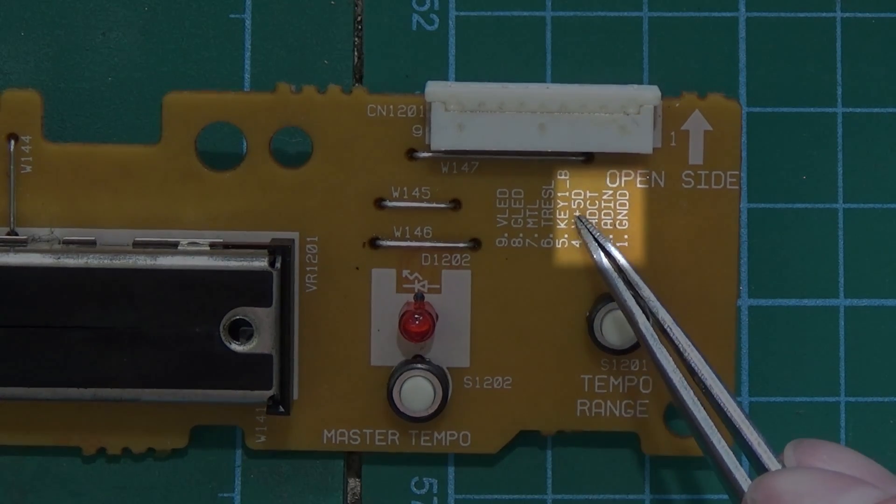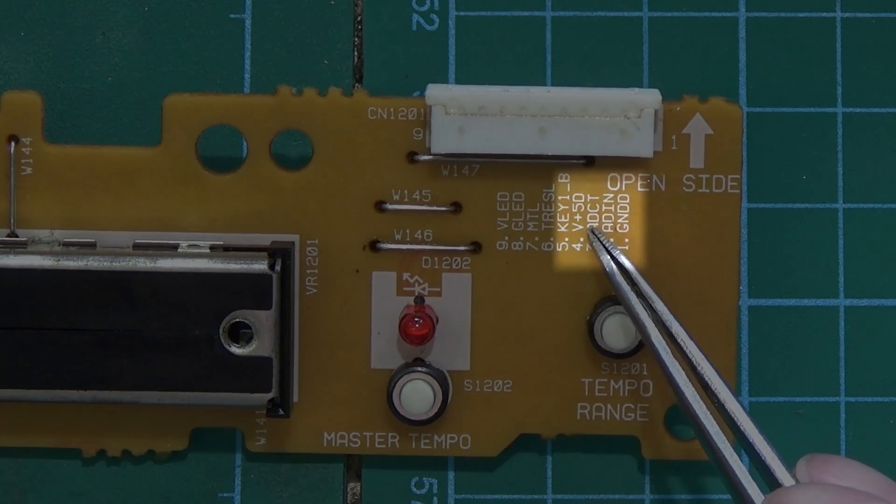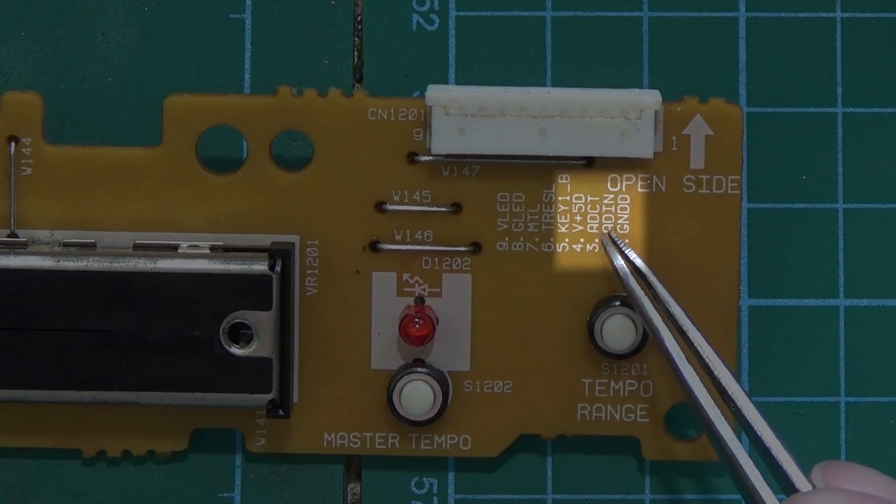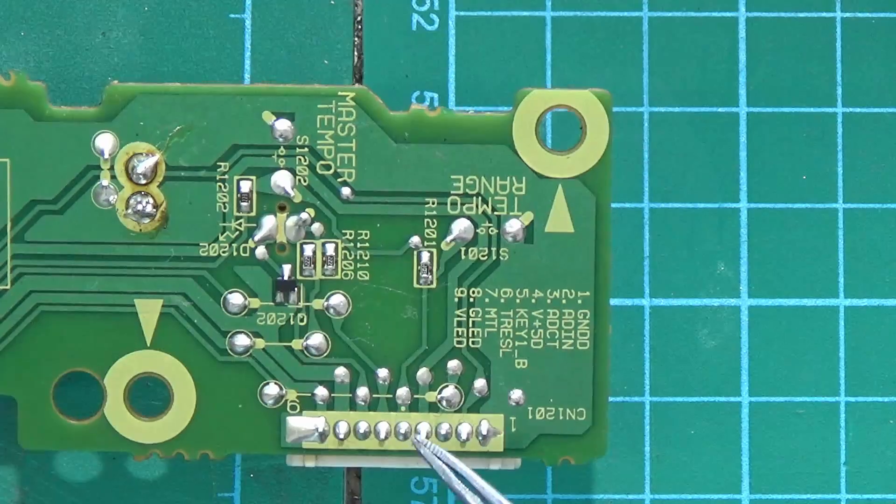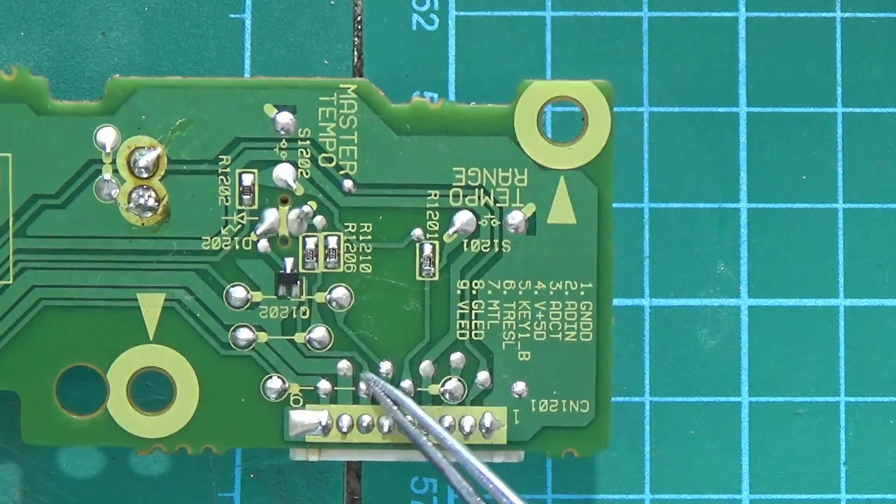The last four controls are for the pitch slider. We're bypassing those completely and we're going to wire onto the back of it. As we look on the back, we can see that we've got the same solder points for the wires.